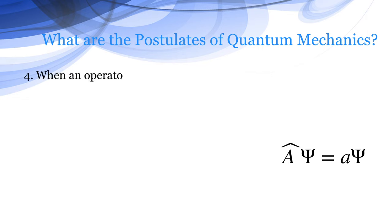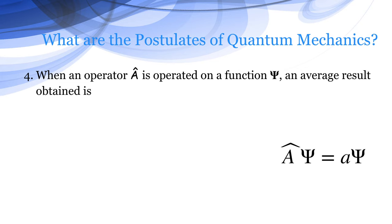Postulate Four: When an operator A overhead is operated on a function psi, an average result obtained is given by the expectation value.